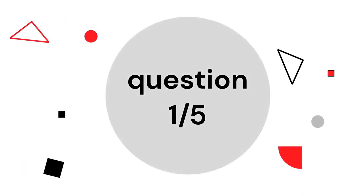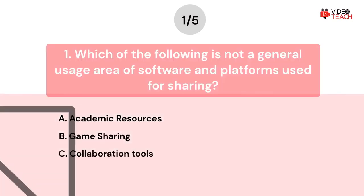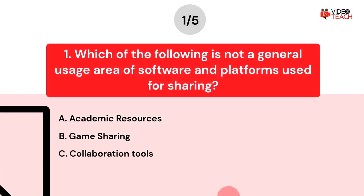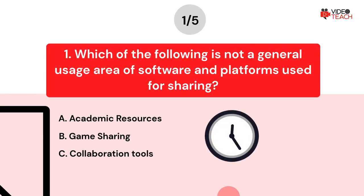Question number one. Which of the following is not a general usage area of software and platforms used for sharing? Option A: Academic resources. Option B: Game sharing. Option C: Collaboration tools. Now you have about 15 seconds to think about your answer.